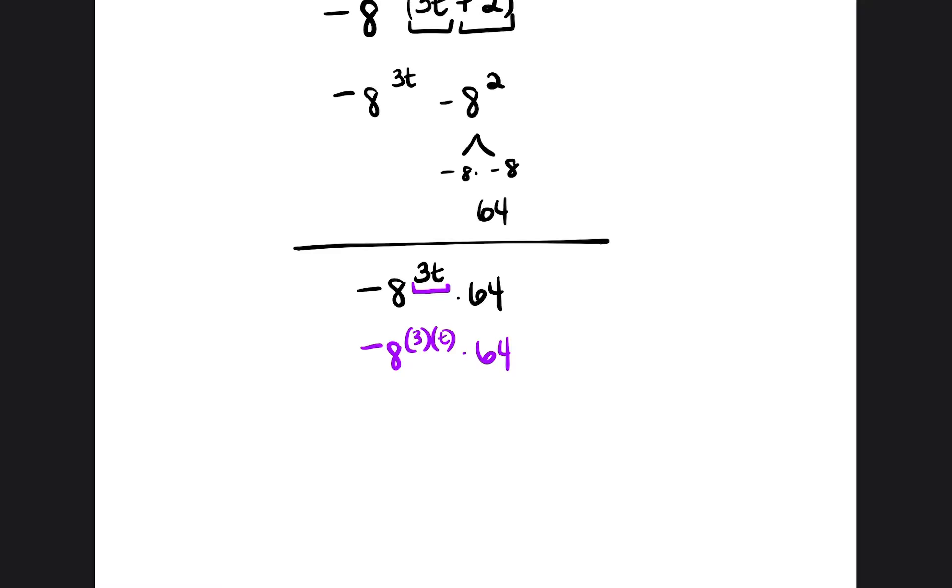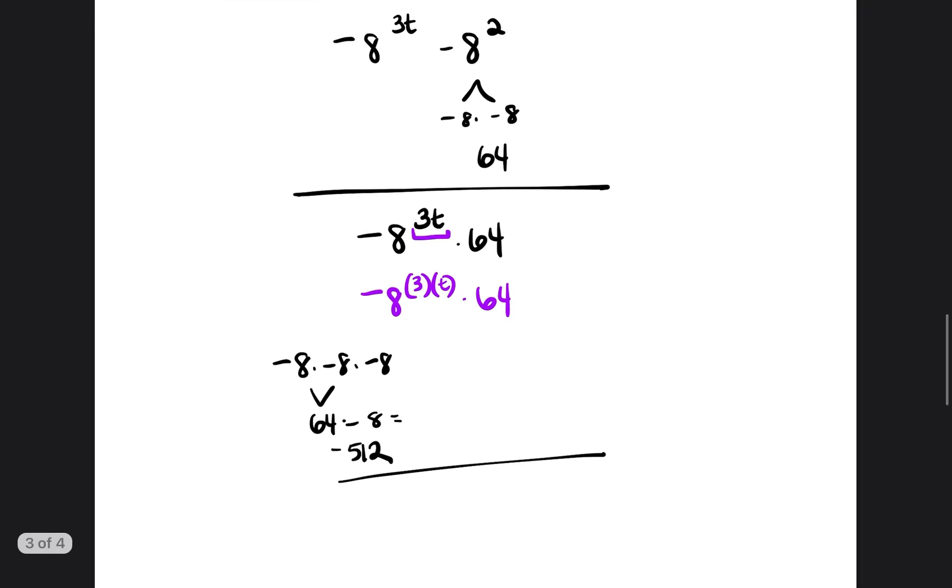So negative 8 to the 3rd power is negative 8 times negative 8 times negative 8. Negative 8 times negative 8 is 64. 64 times negative 8 is negative 512. So we now have negative 512 to the t power times 64.